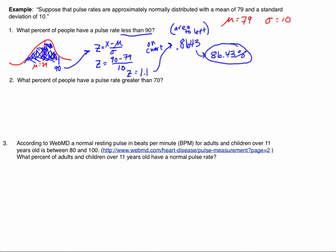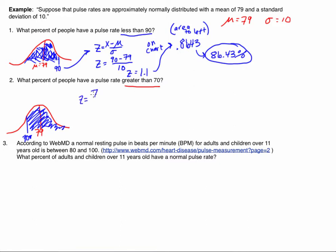For the next problem, what percent of people have a pulse rate greater than 70? This is a little different from what we've seen. Let's draw the picture. I know 79 is in the middle, and the observation I'm looking for is 70, which is to the left of the mean. I'm looking for the percent of people with a pulse rate greater than 70, so I'm looking for the area to the right of 70. I still need to find the z-score associated with 70: 70 minus 79, divided by 10.